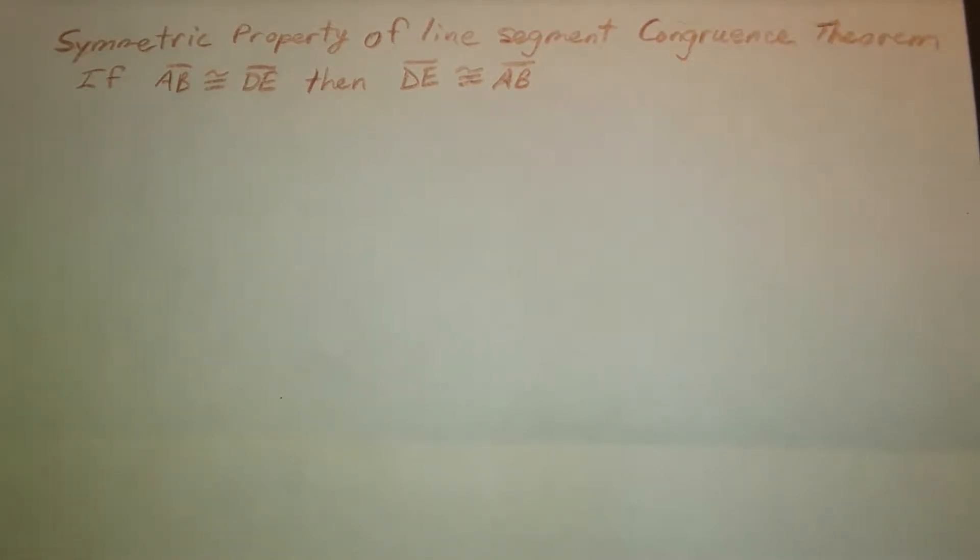We are going to go on a journey of introducing strategies for problem solving by looking at a theorem from geometry and seeing if we can prove this theorem. The name of the theorem is the symmetric property of line segment congruence, and it states that if segment AB is congruent to DE, then DE is congruent to AB.